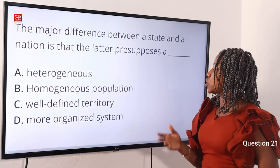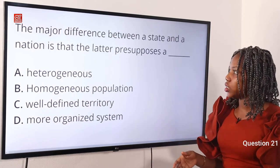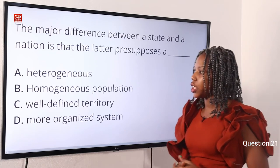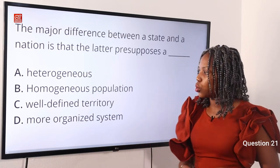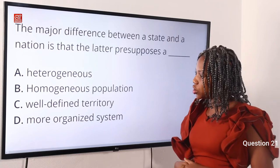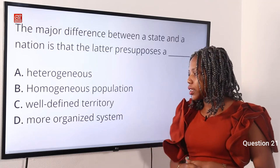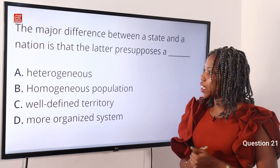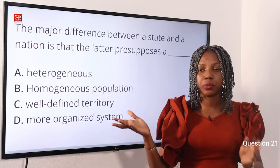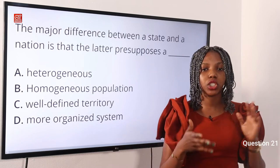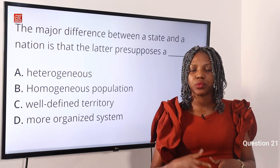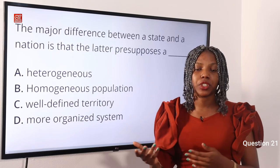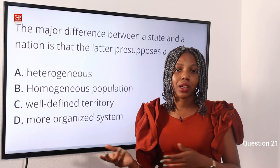The major difference between a state and a nation is that the latter presupposes a dash. Option A, heterogeneous. Option B, homogeneous population. Option C, defined territory. Option D, more organized system. The answer to this question is homogeneous. Option B is the correct answer. Homogeneous simply means of the same kind, while heterogeneous means of different or diverse character or culture.